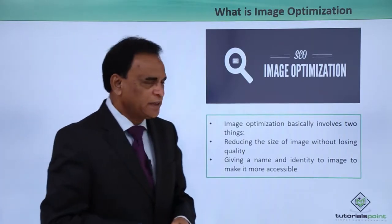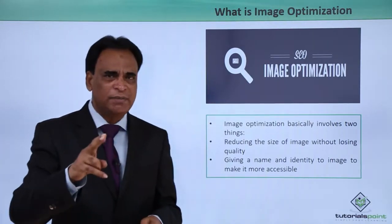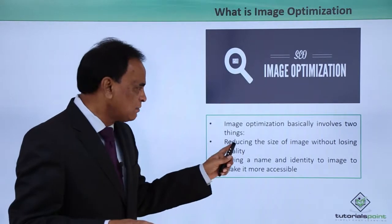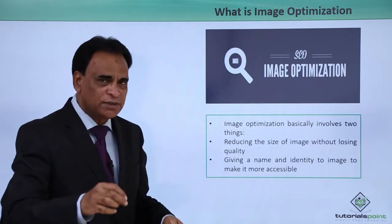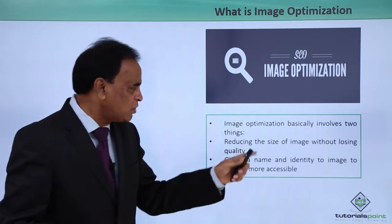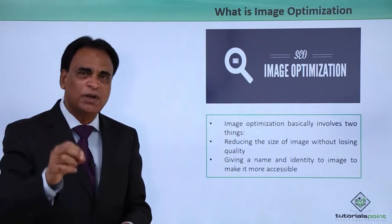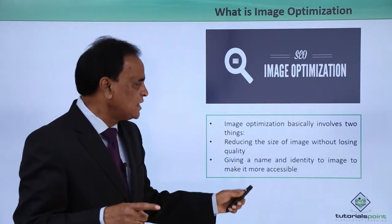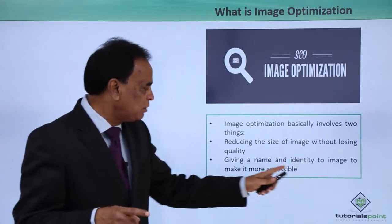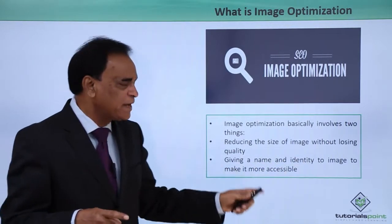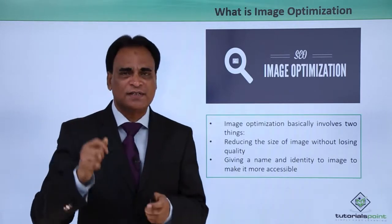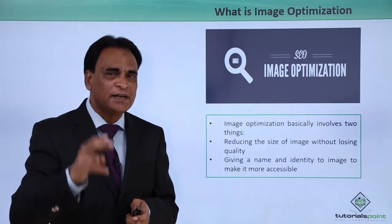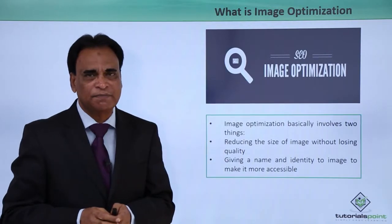What is Image Optimization? Image Optimization involves two basic things. One is reducing the size of the image without losing the quality of the image. The second factor is giving a name and identity to an image and making it more accessible. These are the two key elements related with Image Optimization.